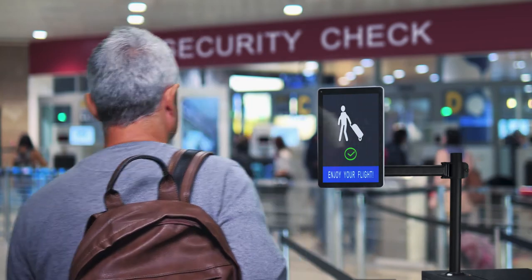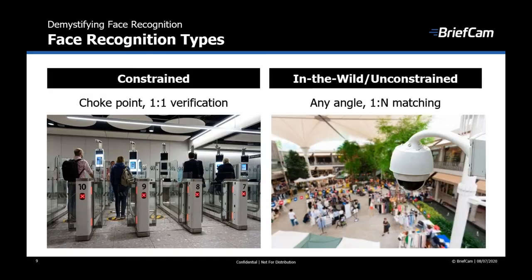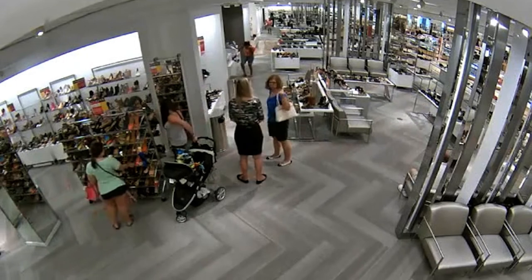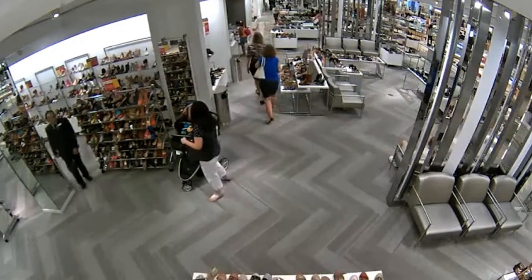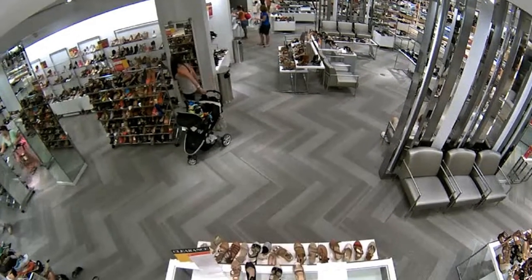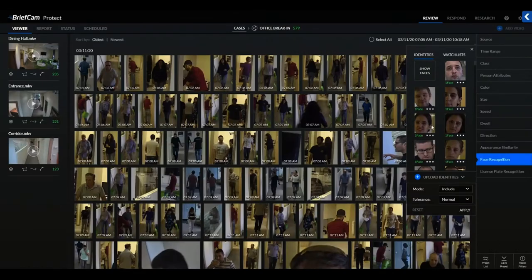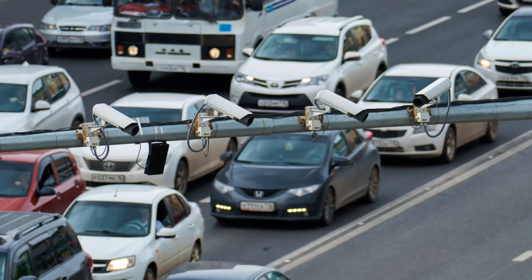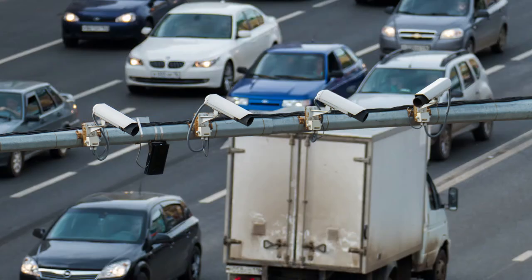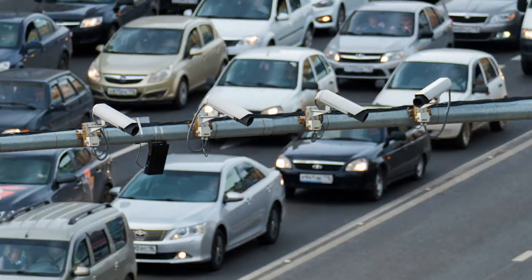In an in-the-wild or unconstrained mode, the software compares faces in a pre-set watchlist to faces in the video surveillance footage. In challenging conditions such as pose variation, low resolution, facial expression, different hairstyles, illumination changes, blurriness, and occlusion between people, people and vehicles will appear in different angles, pose, and quality levels, and this is much harder.